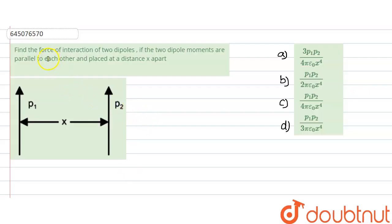In this question, we need to find the force of interaction of two dipoles if the two dipole moments are parallel to each other and placed at a distance x apart. Both dipoles are parallel, with their sense towards the positive y direction. We will first calculate the potential energy and then from the potential energy we will calculate the force.